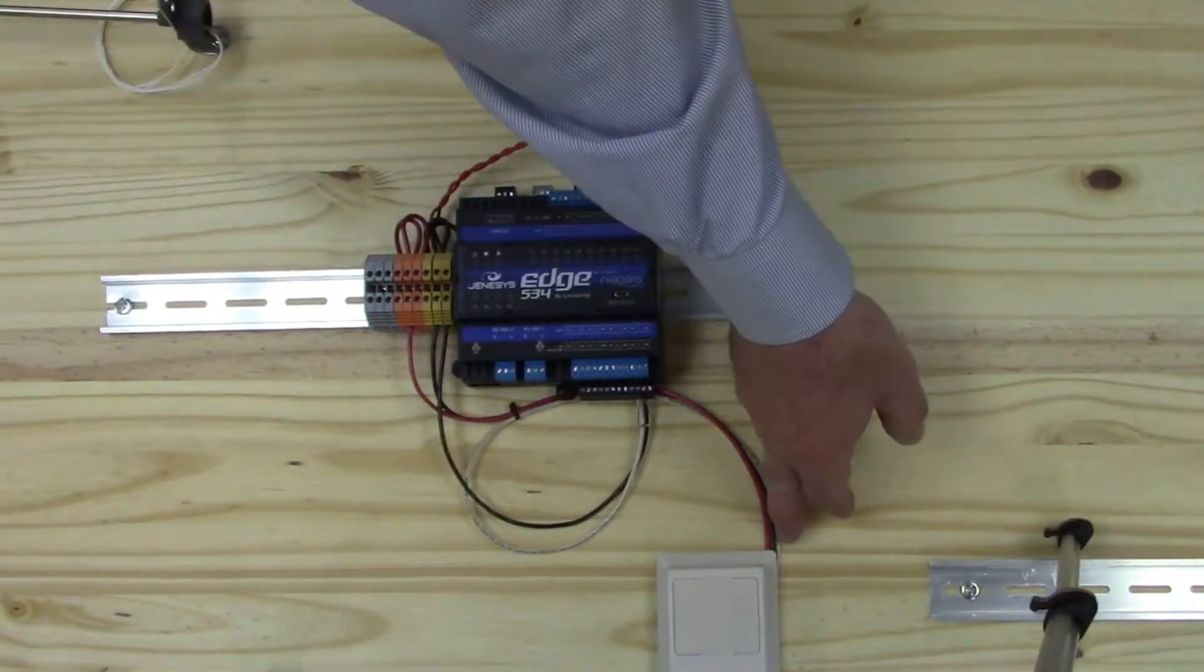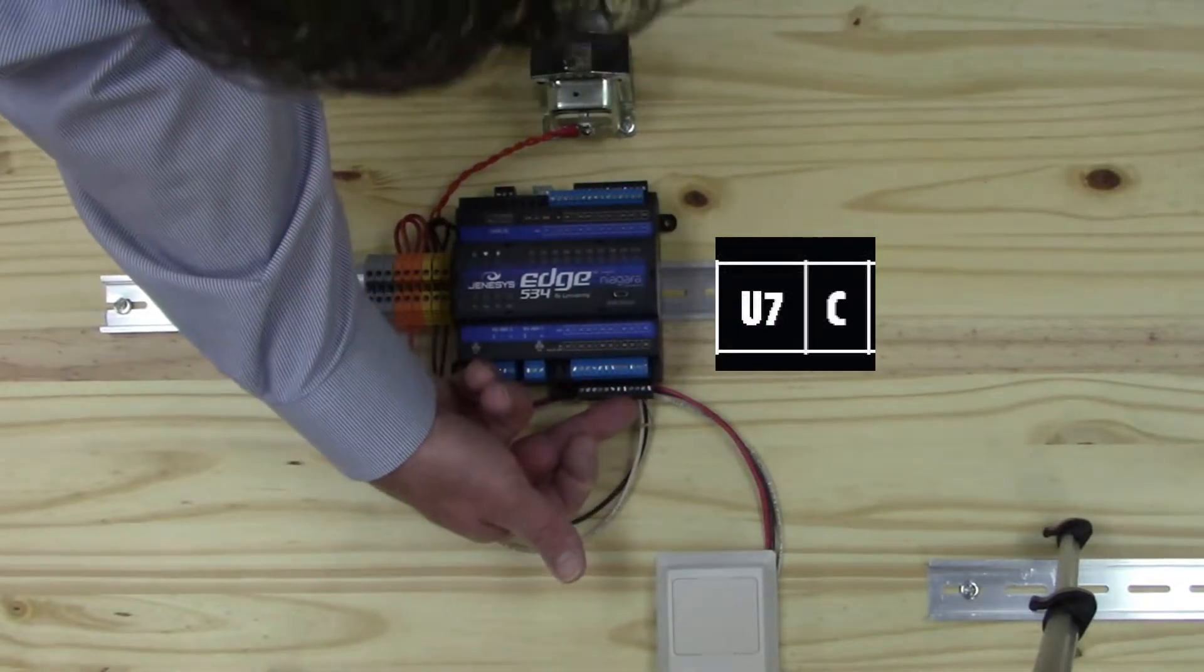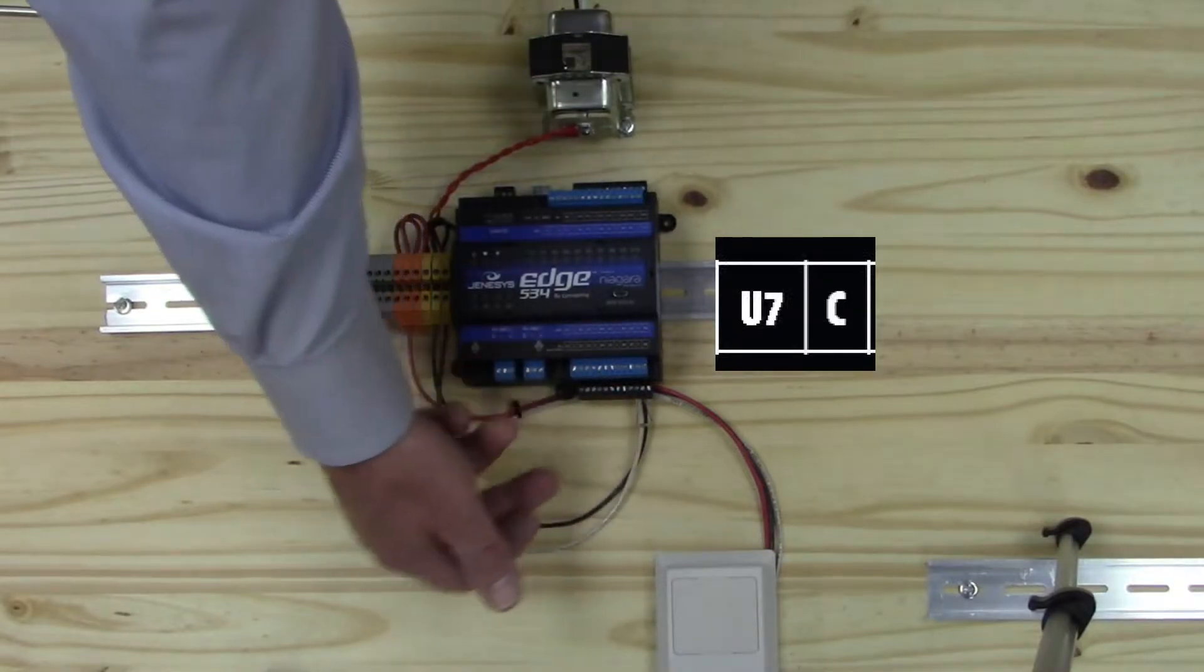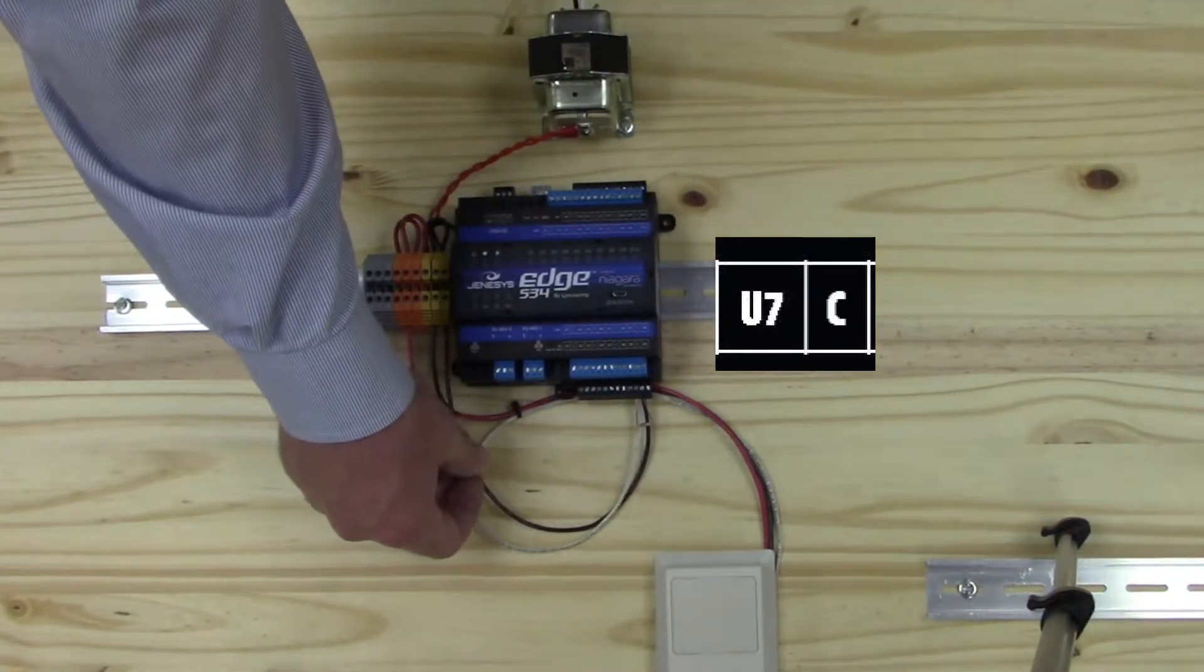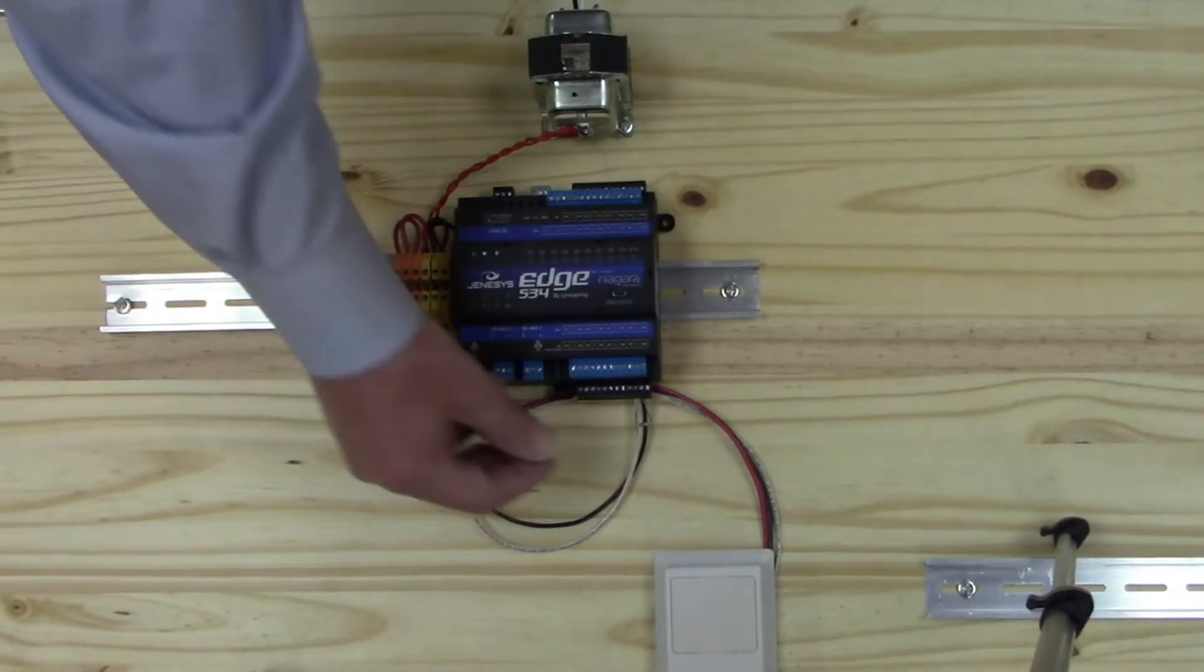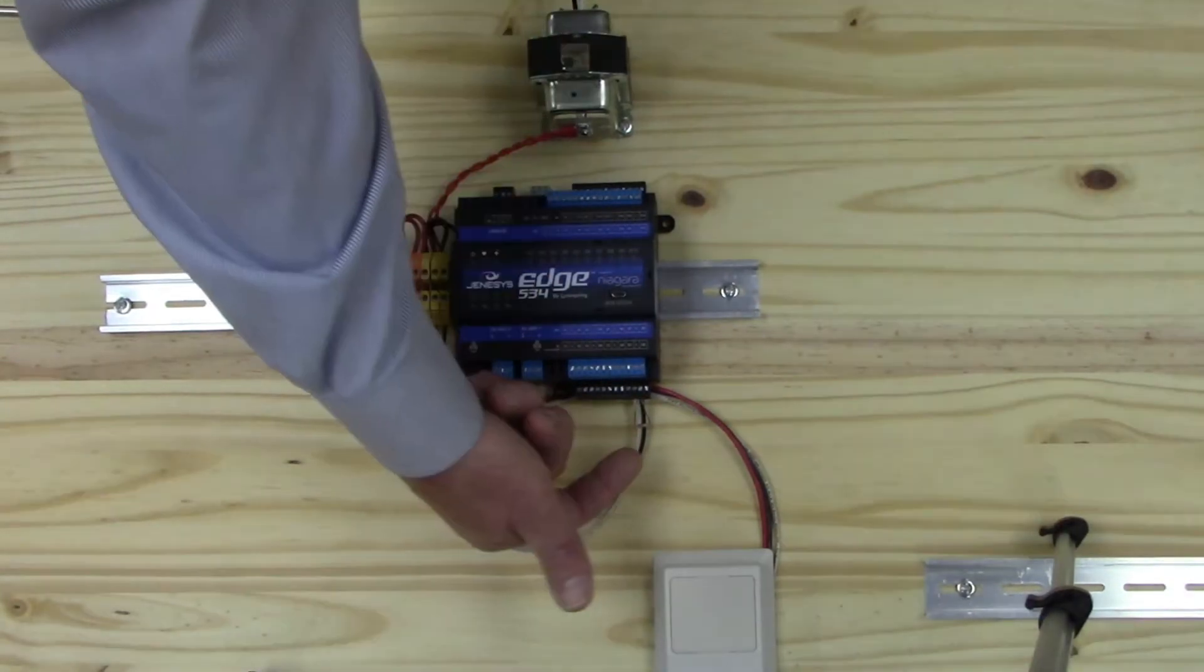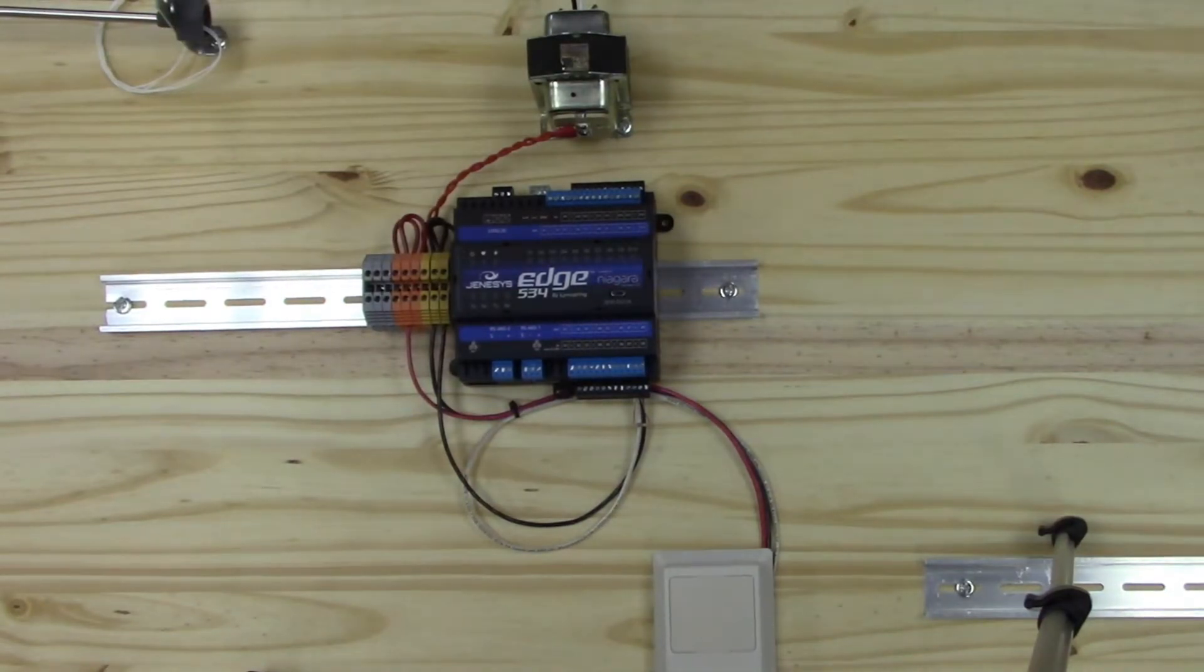The signal from our humidity sensor is this white wire. It is coming in, in this case, U7, universal input 7. And then we connect, complete the circuit by using this black wire back to the common of the transformer. And then finally adding a 499 ohm resistor to complete that signal for us.